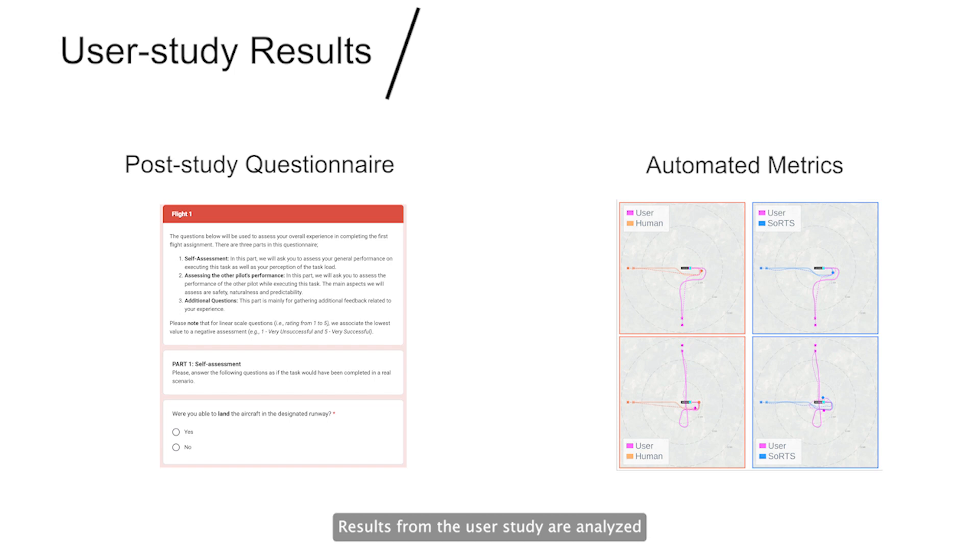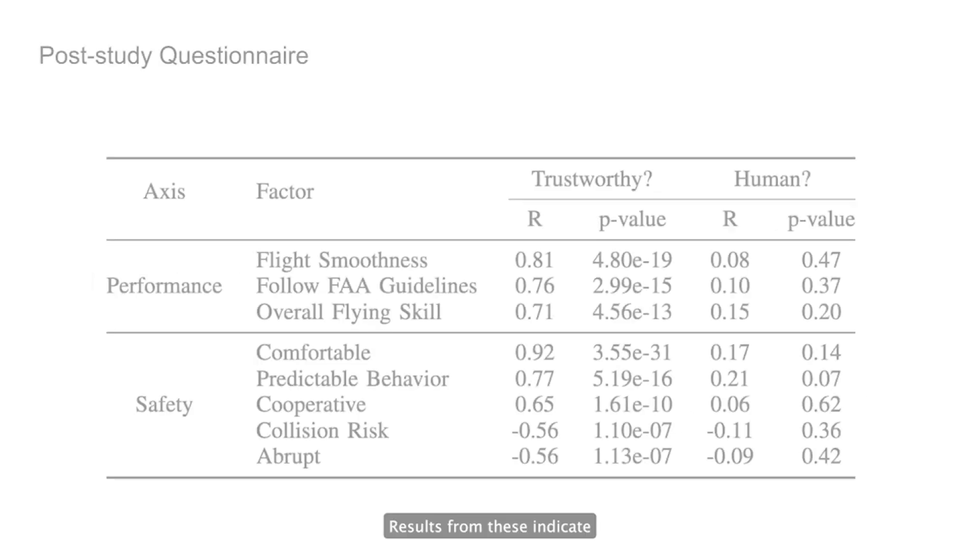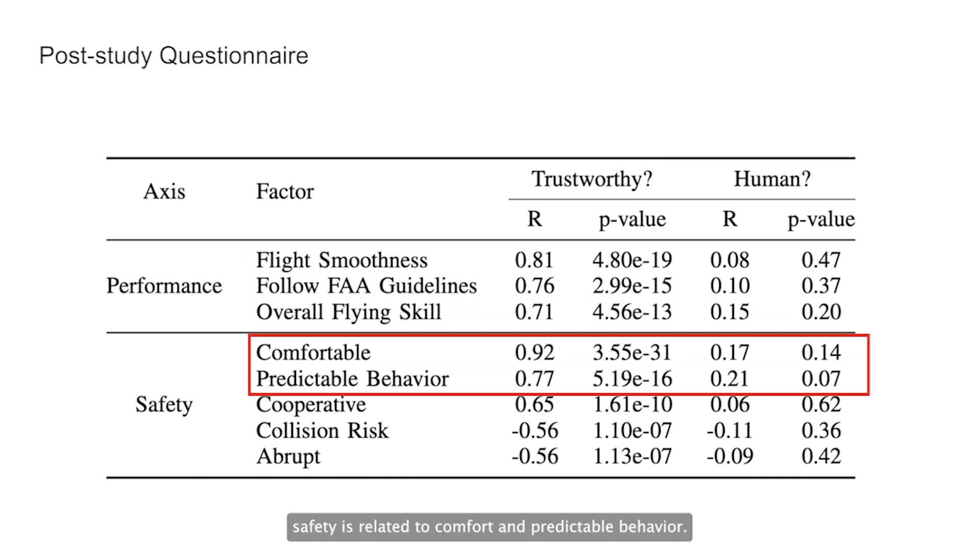Results from the user study are analyzed using post-study questionnaires and using automated metrics on the recorded interaction trajectories. The questionnaires relate humanness and trustworthiness with navigation performance and safety. Results from these indicate a high level of correlation between trajectory smoothness and following FAA guidelines with performance. On the other hand, safety is related to comfort and predictable behavior.